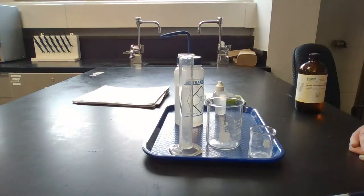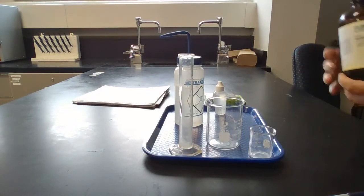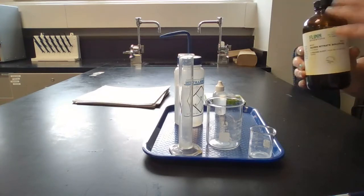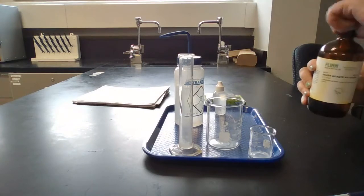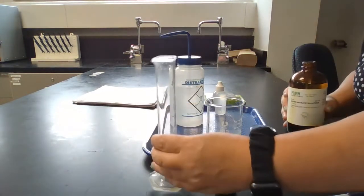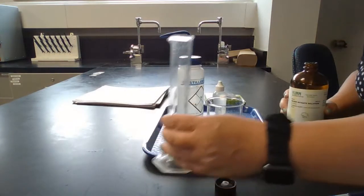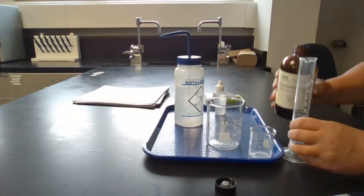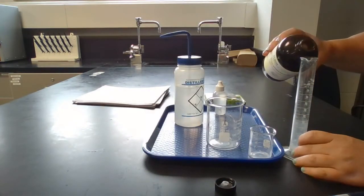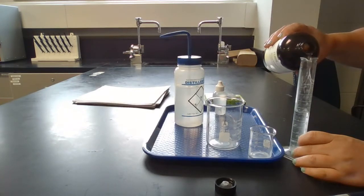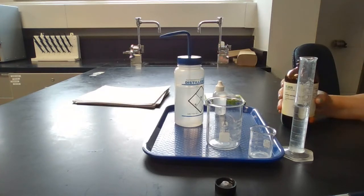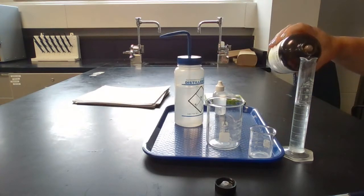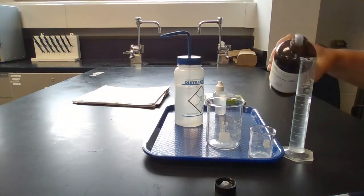Next thing you'll do is measure out 40 milliliters of silver nitrate. Silver nitrate is not on your tray, you're gonna have to share this bottle because it needs to be kept in a light block bottle, so everyone is gonna need to share that. So you can get your graduated cylinder out and measure 40 milliliters. It doesn't need to be exact, and I'll talk about what to do in a minute with that.